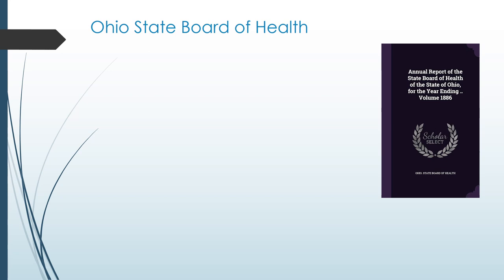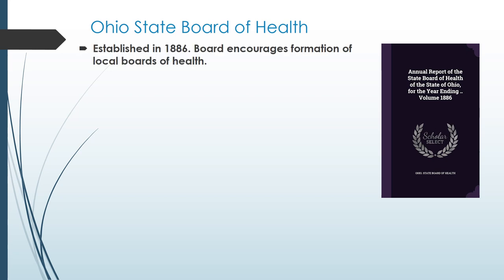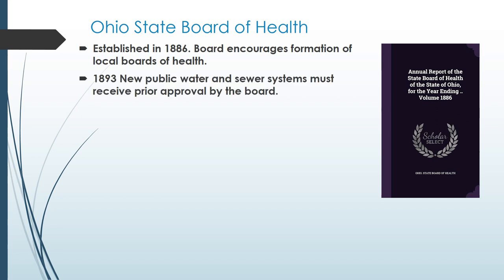In Ohio, the Ohio State Board of Health was established in 1886, and the board encouraged the formation of local boards of health. In 1893, new public water and sewer systems were required to receive prior approval by the board. In 1897, the board began inspecting water systems, hiring an engineer to start inspecting public water systems.